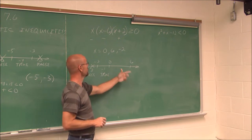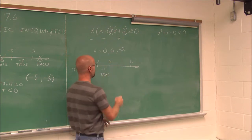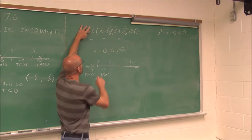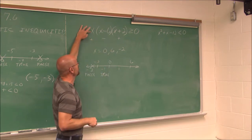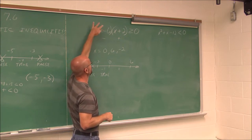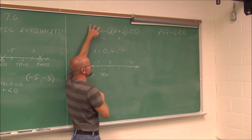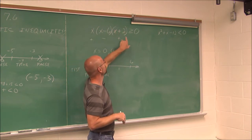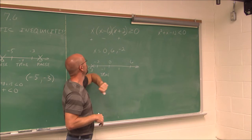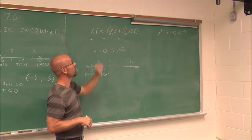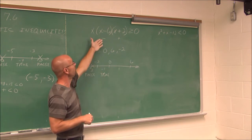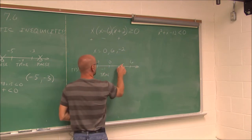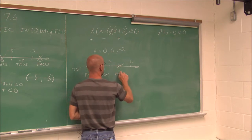Let's pick a test point between 0 and 6 — let's choose positive 1. If I put positive 1 in here, positive 1 is positive. 1 minus 6 is negative 5 — I'm just concerned the factor is negative. And 1 plus 2 is a positive 3. So I only have one negative here; multiplying these factors together, that would be negative. Negative values are not greater than 0, so this interval is false.